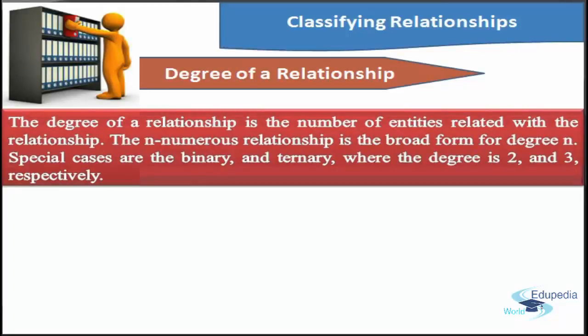The degree of a relationship is the number of entities related within the relationship. The n-ary relationship is the broad form for degree n. Special cases are binary and ternary, where the degree is 2 and 3 respectively. A binary relationship — the association between two entities — is the most commonly seen type in the real world. A recursive binary relationship occurs when an entity is connected to itself; for example, some employees are relatives of other employees. A ternary relationship includes three entities and is used when a binary relationship is inadequate. Many modeling methods distinguish only binary relationships.